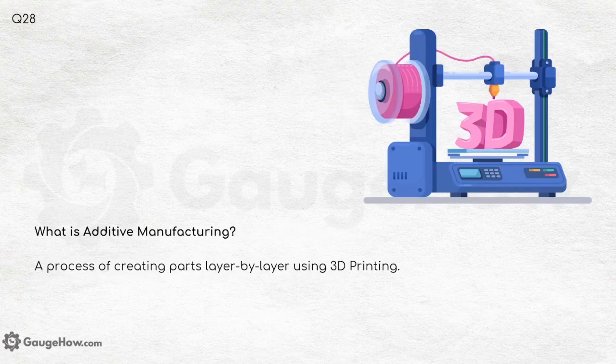What is additive manufacturing? Mechanical engineers typically study additive manufacturing in their second or third year of engineering. It is a process of creating parts layer by layer using 3D printing.